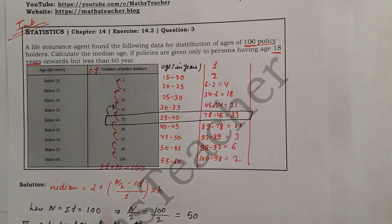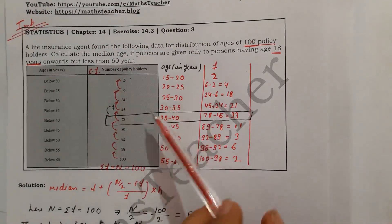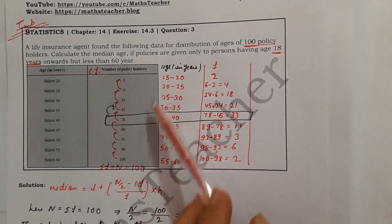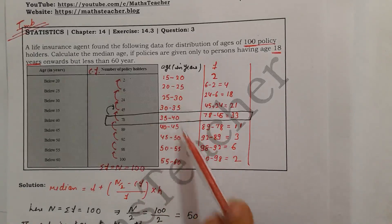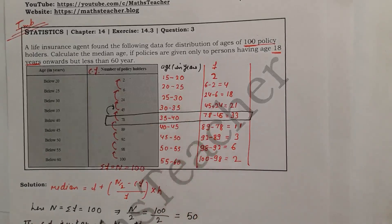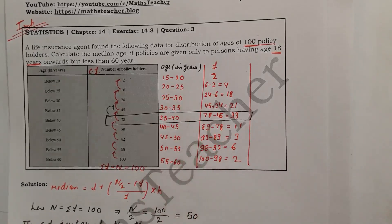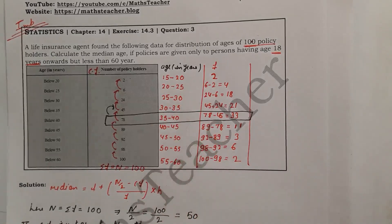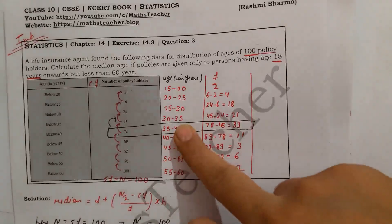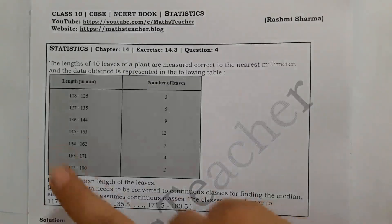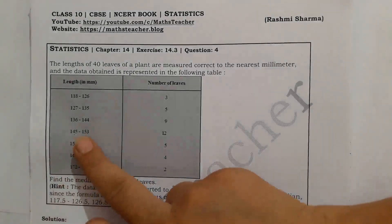Our data should be in continuous form, also called exclusive form. This is our exclusive form and this is our inclusive form.